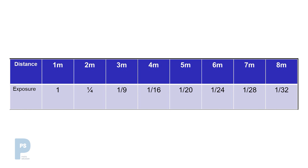So why does inverse square law matter, and how can we use it on a day-to-day basis? Working from that same template of double the distance, quarter the amount of light, here is what happens over a range of distances from a light source. If we start with a correct exposure at one metre as a unit of one, we know that if we double the distance to two metres we have a quarter of the amount of light. Going up one metre at a time rather than doubling every time, look at how the numbers change.